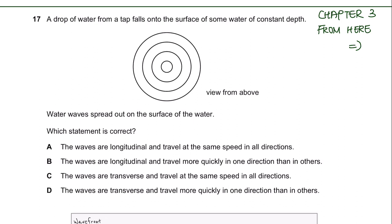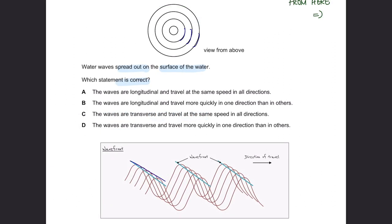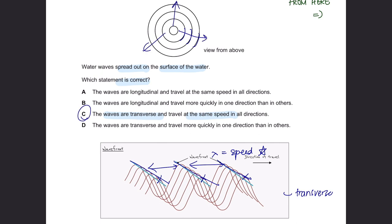Question 17. A drop of water from a tap falls onto the surface of some water at a constant depth. Which statement about the waves spreading out is correct? The lines you see are wavefronts formed from the peaks of amplitude—this is a transverse wave. If the wavelengths are the same, the speed is also the same. So the correct statement is that the waves are transverse and travel at the same speed in all directions. The answer is C.